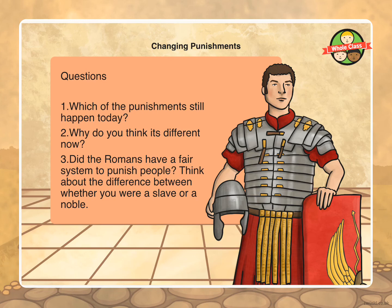To finish off the lesson, let's think about changing punishments. Normally we'd have a whole class discussion, but this is something you can think about or talk about with friends or family. Which of the punishments we've learned about today still happen in the present day? Why do you think it's different now? Why don't some of those punishments happen anymore? And do you think the Romans had a fair system — think about the difference between whether you were a slave or a noble?